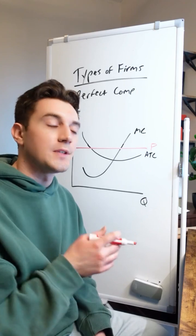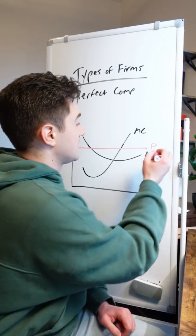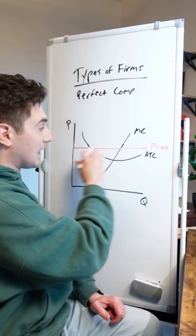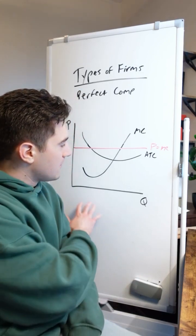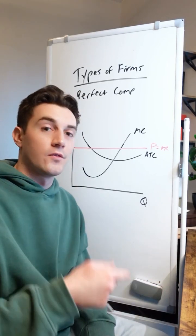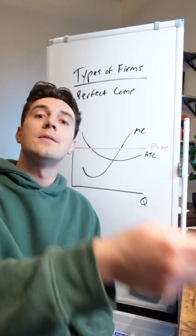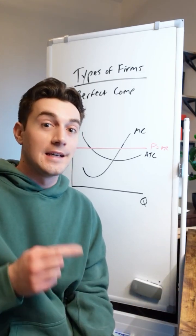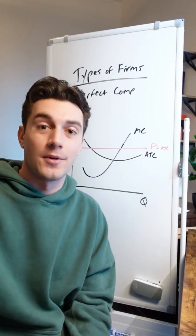And because these firms have to accept the market price, the horizontal price line is the marginal revenue curve. No matter at what point of output the perfectly competitive firm is at, their next unit is going to bring in additional revenue equal to the price that's set by the market.